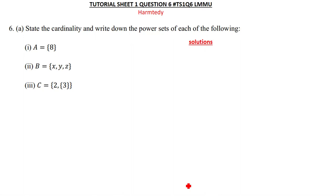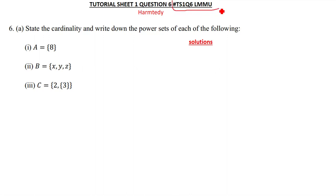Question six says: state the cardinality and write down the power sets of each of the following. If you want to find this question on YouTube, search for 'ash ts1 q6 lmmu' — meaning tutorial sheet one, question six, at your university.